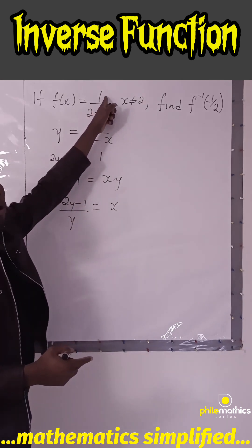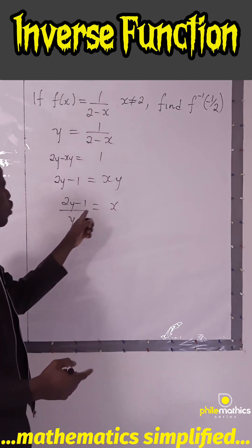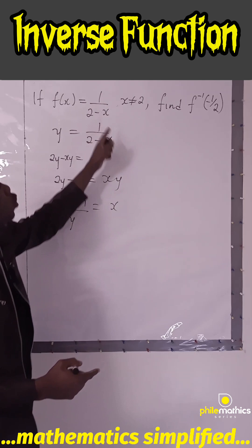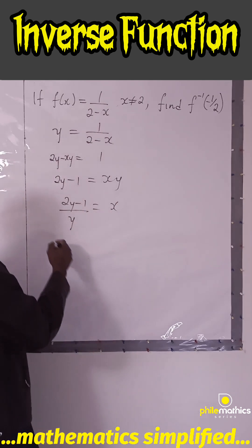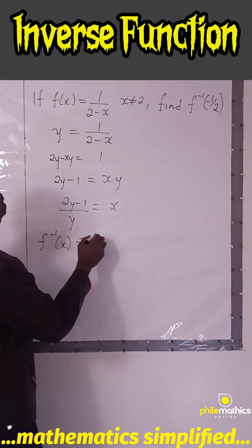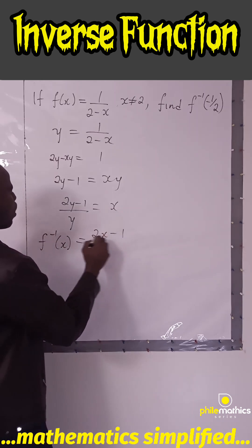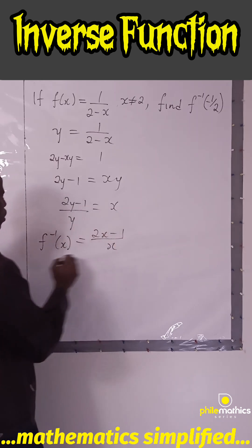To verify that this is the inverse, if you substitute this for x in the original function, you should get the identity. So f^(-1)(x) = (2x - 1)/x.